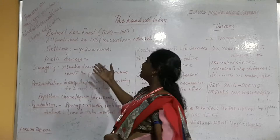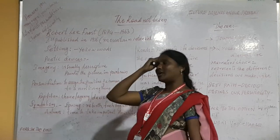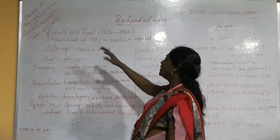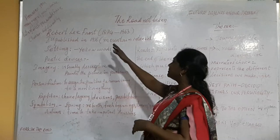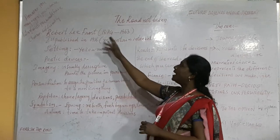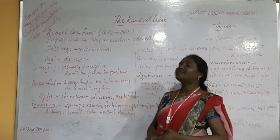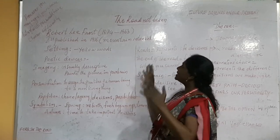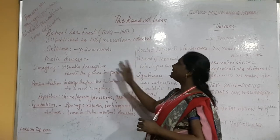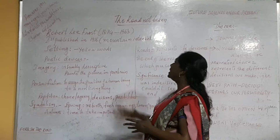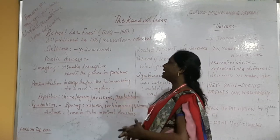Before we start going in depth into the topic, I would like to say something about Robert Lee Frost. Robert Lee Frost lived between 1874 to 1963, and this poem was first published in 1916 in the Mountain Interval.